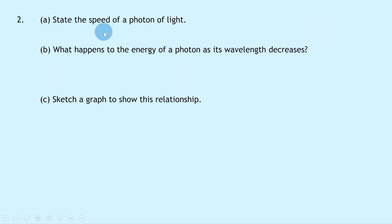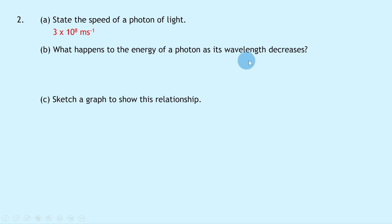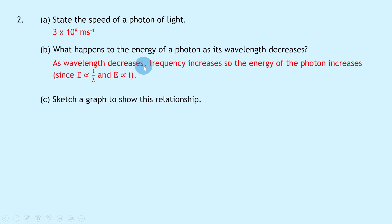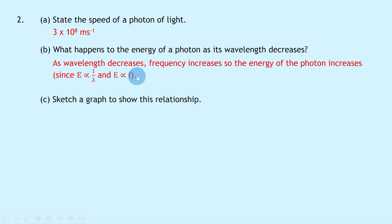Question 2a says: state the speed of a photon of light. Photons travel at the speed of light c, which is 3 × 10⁸ metres per second from the datasheet. Part b then says: what happens to the energy of a photon as its wavelength decreases? As wavelength decreases, frequency increases, so the energy of the photon increases, since E is directly proportional to 1/λ and E is directly proportional to f.